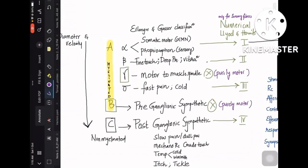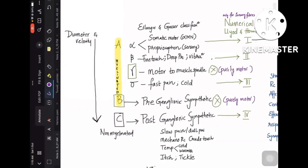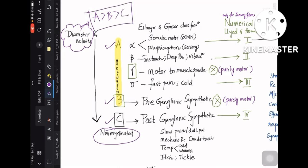First is the Erlanger-Gasser classification and the second is the numerical or Lloyd and Hans classification. In Erlanger-Gasser, there are A, B, and C fibers. A and B are myelinated, shaded in yellow, whereas C is non-myelinated. Since myelination is present only in A and B, the diameter of A is greater than B, which is greater than C. Diameter and velocity of conduction decrease as we go down — A > B > C — because velocity depends on the myelin sheath and nodes of Ranvier. Non-myelinated C fibers have the slowest conduction velocity.